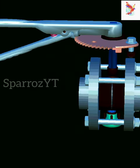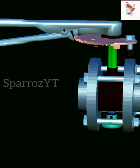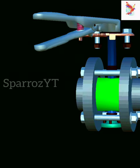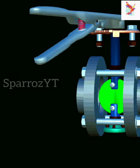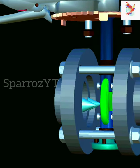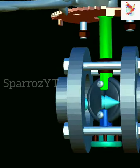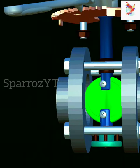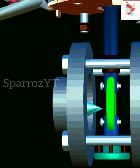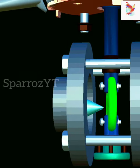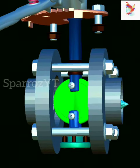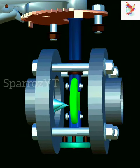The butterfly is a metal disc mounted on a rod. When the valve is closed, the disc is turned so that it completely blocks off the passageway. When the valve is fully open, the disc is rotated a quarter-turn so that it allows an almost unrestricted passage of the fluid.